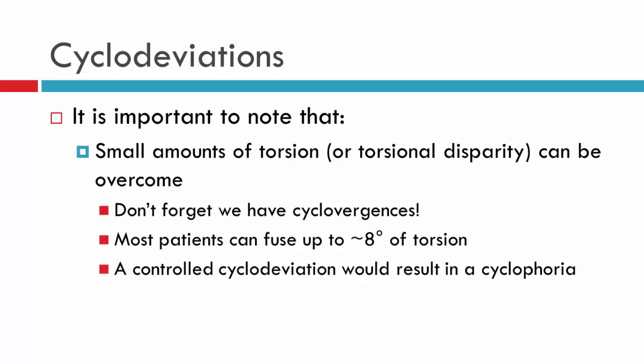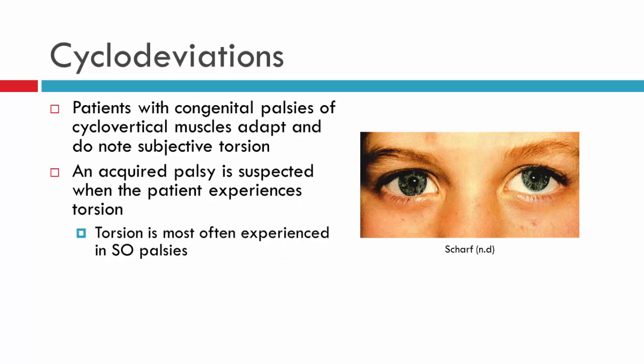During cover testing generally, the only observation you'll make is the vertical and the horizontal deviation; it's very difficult to observe cyclo-deviations and cyclophorias. Another thing to note is that where patients have had a congenital palsy, they are able to adapt to torsion. This means that the patient will not report torsion — you'll ask them about tilt and they'll tell you the image is not tilted. However, objectively you will find that there is a cyclo-deviation and that the eye is excyclo- or encyclo-rotated. Where a patient does complain of torsion or a tilted image, it's likely to be an acquired palsy rather than a congenital palsy.